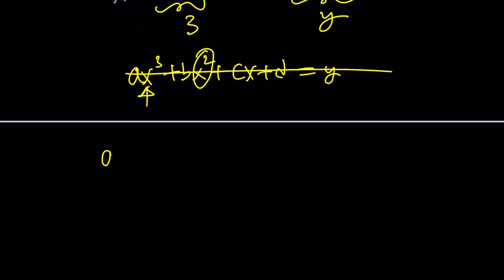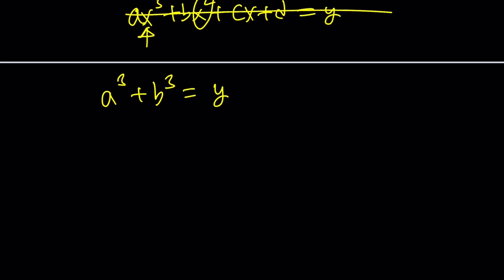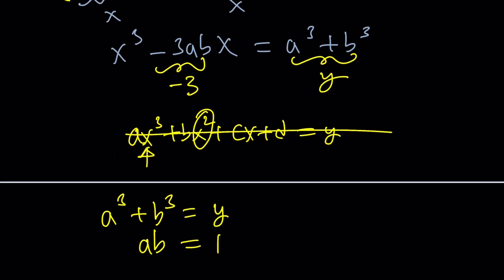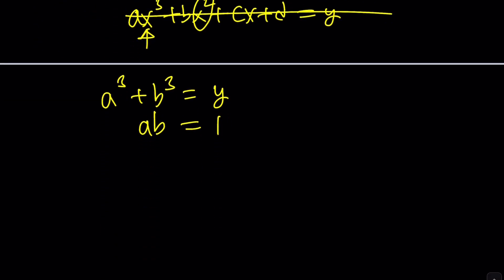Let's go ahead and focus on this. From here, I get the following: a cubed plus b cubed is equal to y, and ab is equal to 1, right? Because this is supposed to be negative 3. Sorry, I wrote 3, but that's supposed to be negative 3, the coefficient of x. So this gives us a system, but is that a cubic system which we can solve? No. It is quadratic. Why? You'll see.